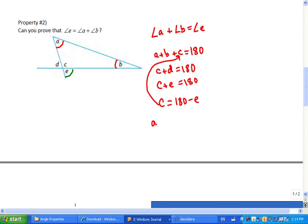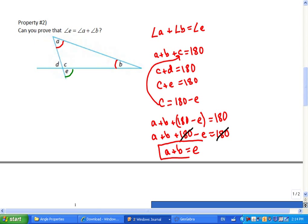So, A plus B plus 180 minus E equals 180. So, that means A plus B equals E. These two I can take out on the same side, and I can move the E to the other side. So, for now, we're not going to expect you guys to prove it like that, but this is to give you some idea of why it's true.